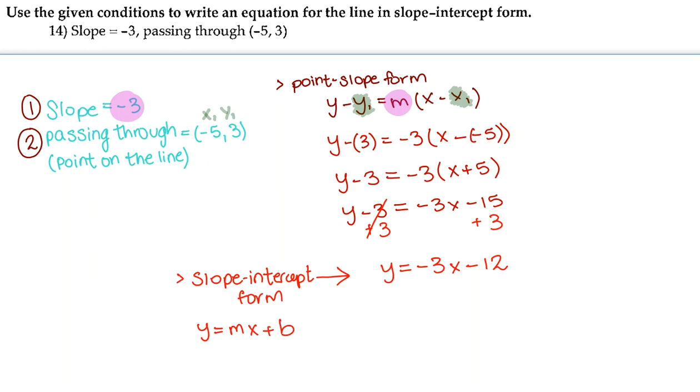So because we had the conditions of a slope and one point, we can only put these conditions inside of a point-slope-form equation. When we put these conditions inside of a point-slope-form equation and we solve for y, the equation turns into slope-intercept form.